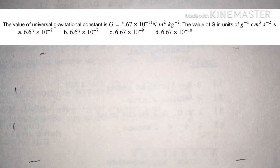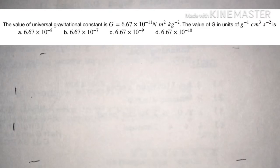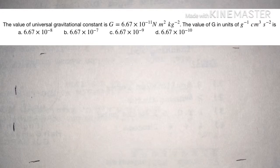The value of the universal gravitational constant is G equals 6.67 into 10 power minus 11 newton meter square per kilogram square. The value of G in units of per gram centimeter cube second square is: option A: 6.67 into 10 power minus 8, option B: 6.67 into 10 power minus 7, option C: 6.67 into 10 power minus 9, option D: 6.67 into 10 power minus 10.